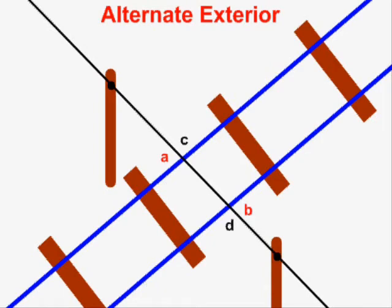Alternate exterior angles can be illustrated with a situation that shows a set of train tracks and a wire that crosses the train tracks. The wire represents a transversal, which is the name for a line that crosses a pair of other lines, and the train tracks represent a pair of parallel lines because we know that train tracks are always parallel.